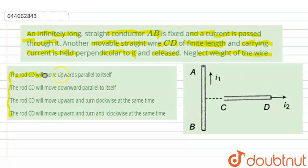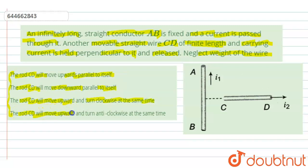In option A, the rod CD will move upwards parallel to itself. In option B, the rod CD will move downward parallel to itself. In option C, the rod CD will move upward and turn clockwise at the same time. And in option D, the rod CD will move upward and turn anti-clockwise at the same time.